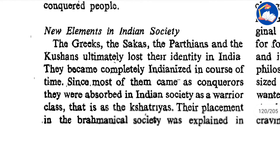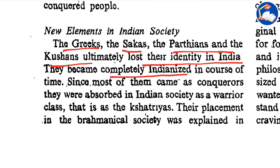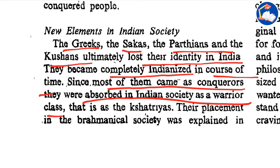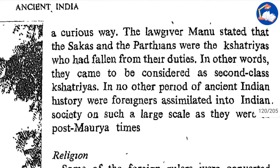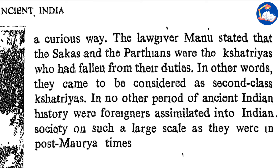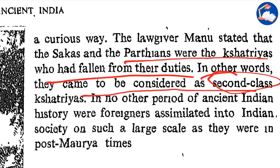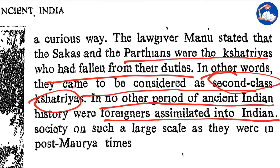In terms of new elements in Indian society, the Greeks, the Sakas, the Parthians and the Kushans ultimately lost their identity in India and became completely Indianized in course of time. Since most of them came as conquerors, they were absorbed into Indian society as warrior classes — that is, the Kshatriyas. The lawgiver Manu stated that the Sakas and the Parthians were Kshatriyas who had fallen from their duties — in other words, they came to be considered as second-class Kshatriyas. In no other period of ancient Indian history were foreigners assimilated into Indian society on such a large scale as in post-Mauryan times.